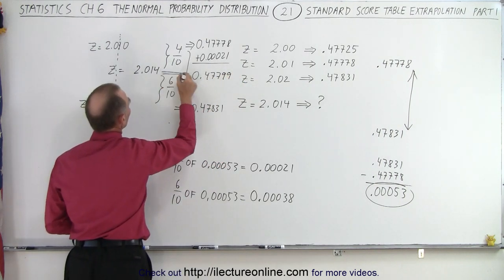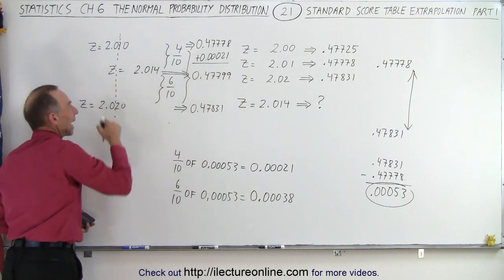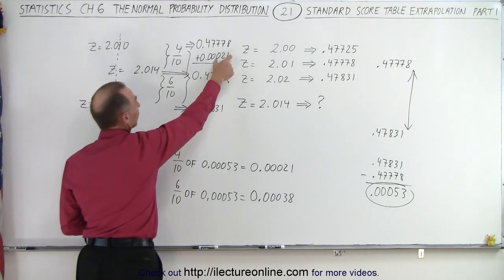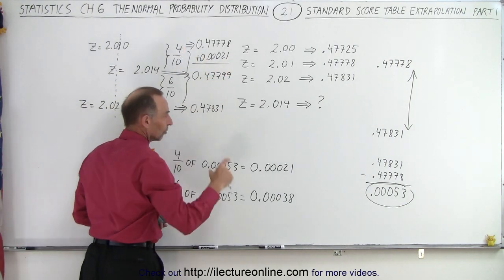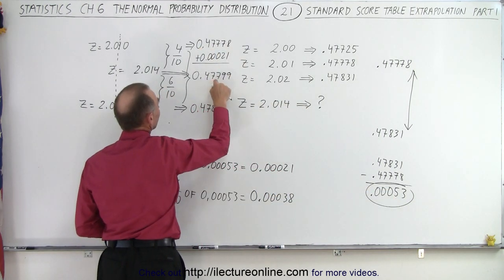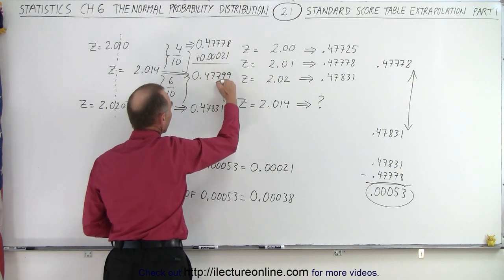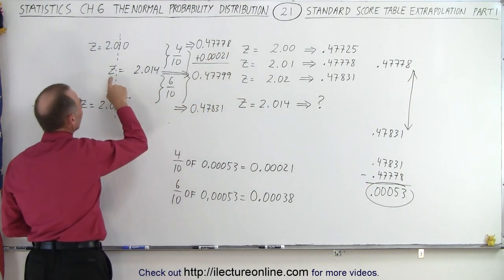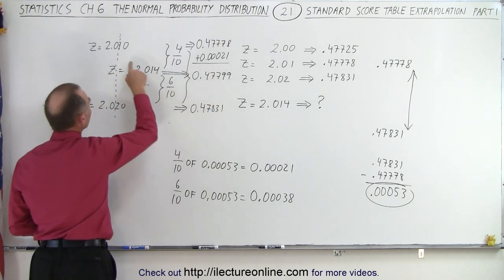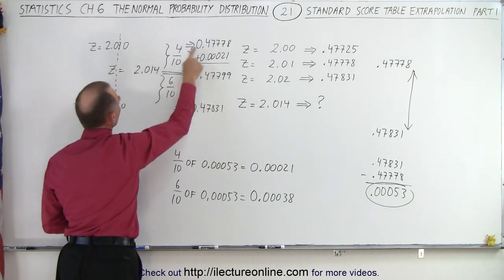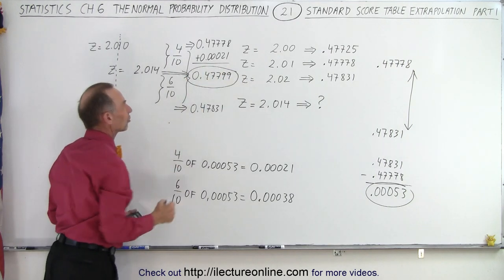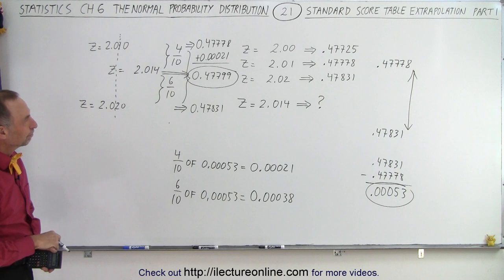So notice that this represents 4 tenths of distance between the two values. If I add that to the smaller value, I get the new value that extrapolated out between those two, so that Z equals 2.014 corresponds to this value right here. This was in the table, this was in the table, this was in the table, and this value we have to extrapolate. And that is how it's done.